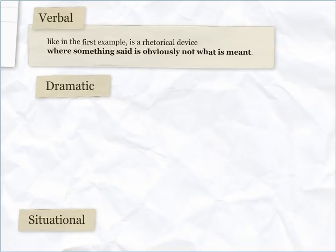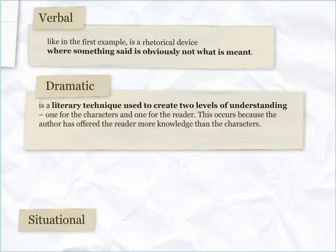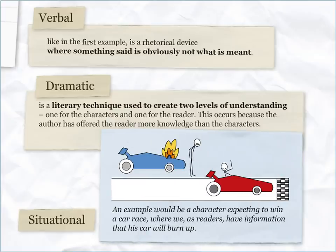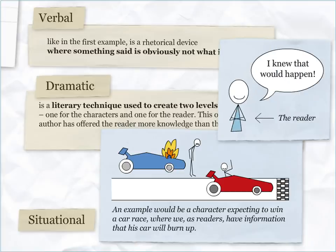Dramatic irony is a literary technique used to create two levels of understanding — one for the characters and one for the reader. This occurs because the author has offered the reader more knowledge than the characters. An example would be a character expecting to win a car race, where we, as readers, have information that his car will burn up.